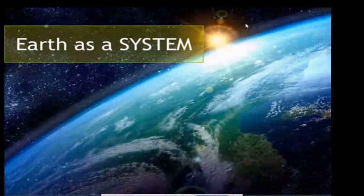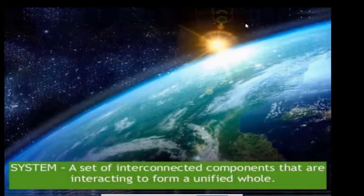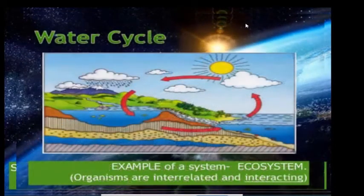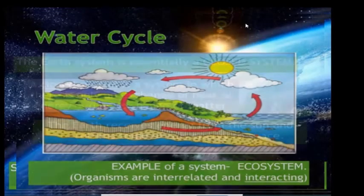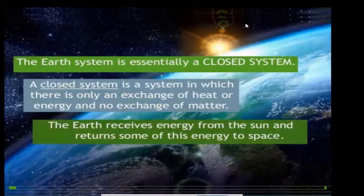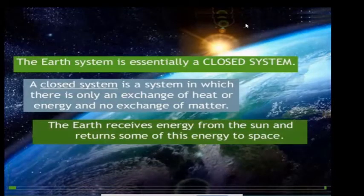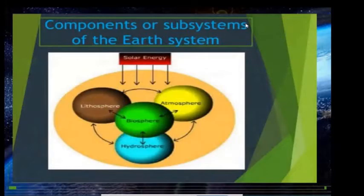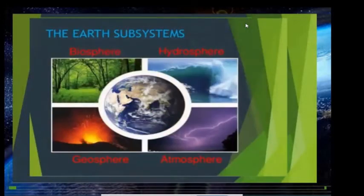Let's move to the next topic: the Earth as a system. A system is a set of interconnected components that interact to form a unified whole. For example, in an ecosystem, organisms are interrelated and there is interaction happening, such as the water cycle. The Earth system is essentially a closed system, meaning there is only exchange of heat or energy but no exchange of matter. The Earth receives energy from the Sun and releases some of that energy into space. The Earth system has four subsystem spheres: the biosphere, hydrosphere, geosphere, and atmosphere.